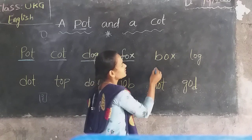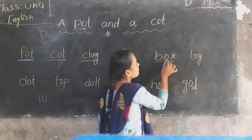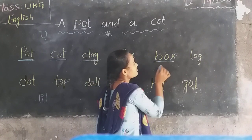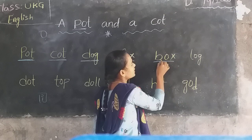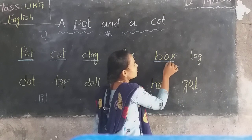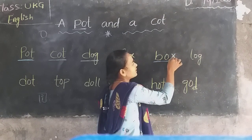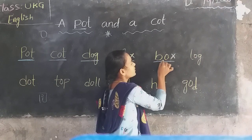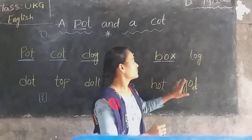Next, here, B-O-X, box. The sound of B is Ba. Next, O sound, O. Next, X sound. Here, B-O-X, box.